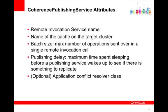A Coherence publishing service typically has the following attributes: the name of the remote invocation service, the name of the cache at the target cluster, the batch size — which is the number of operations sent in a single remote invocation call — the publishing delay, which is the maximum time spent sleeping before a publishing service wakes up to check if there is something to replicate, and, optionally for the active-active case, a conflict resolver class registered by the application.